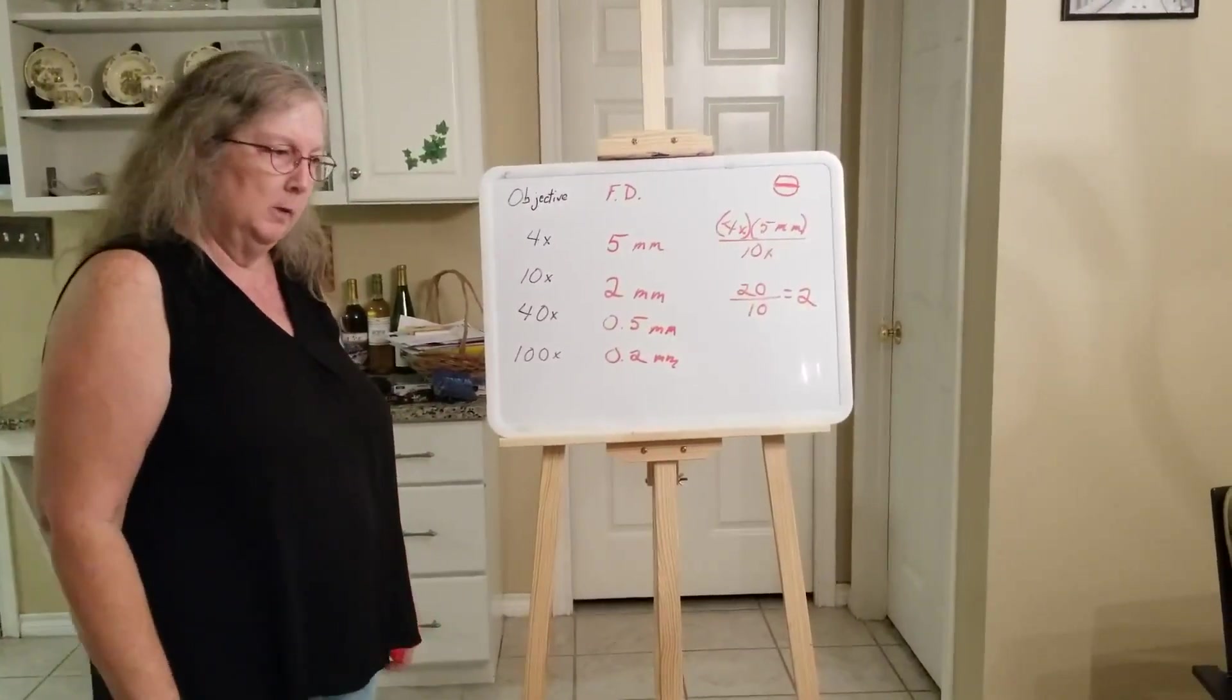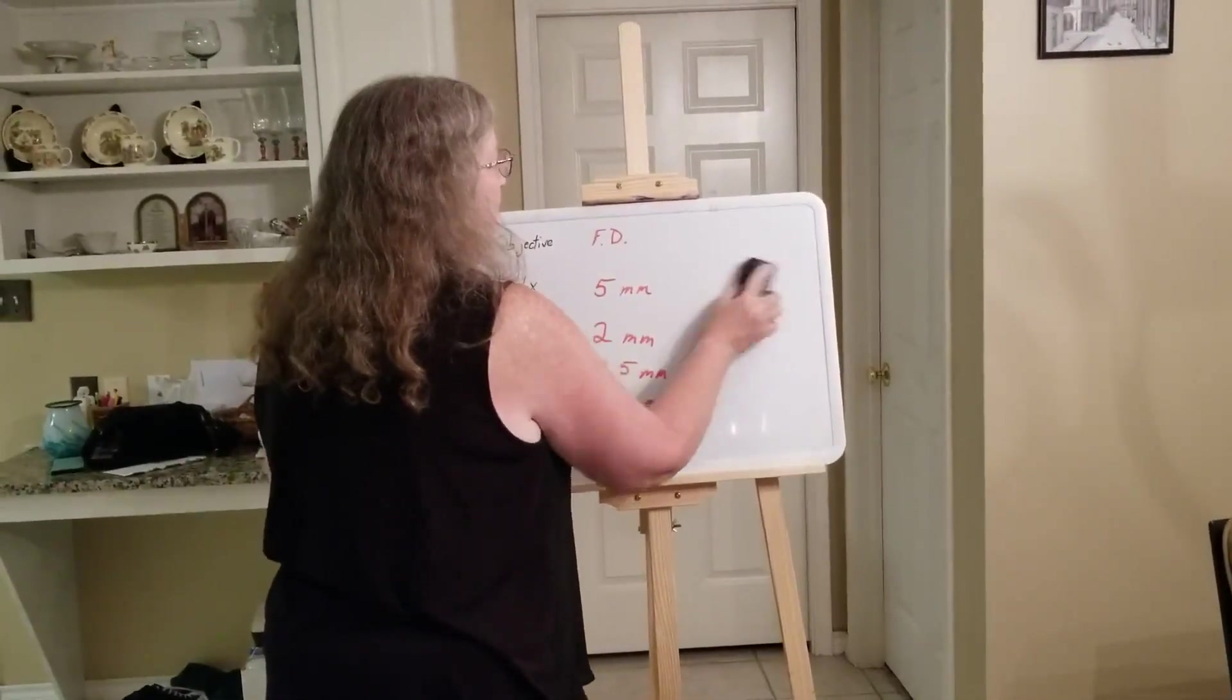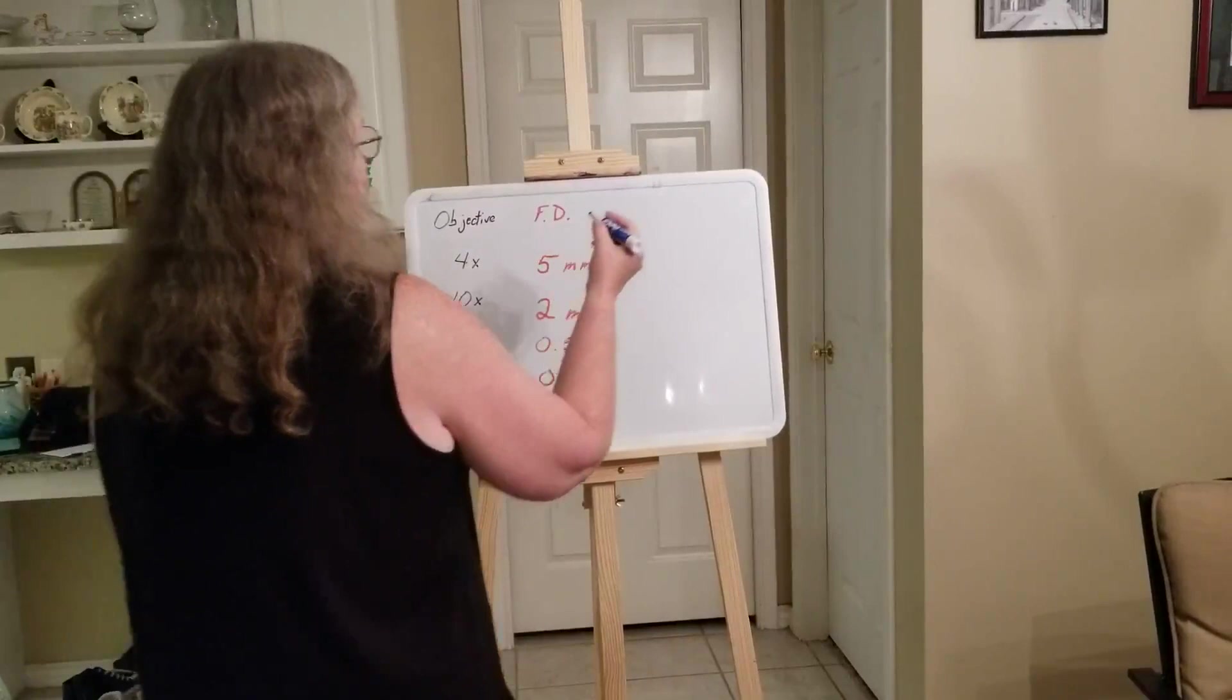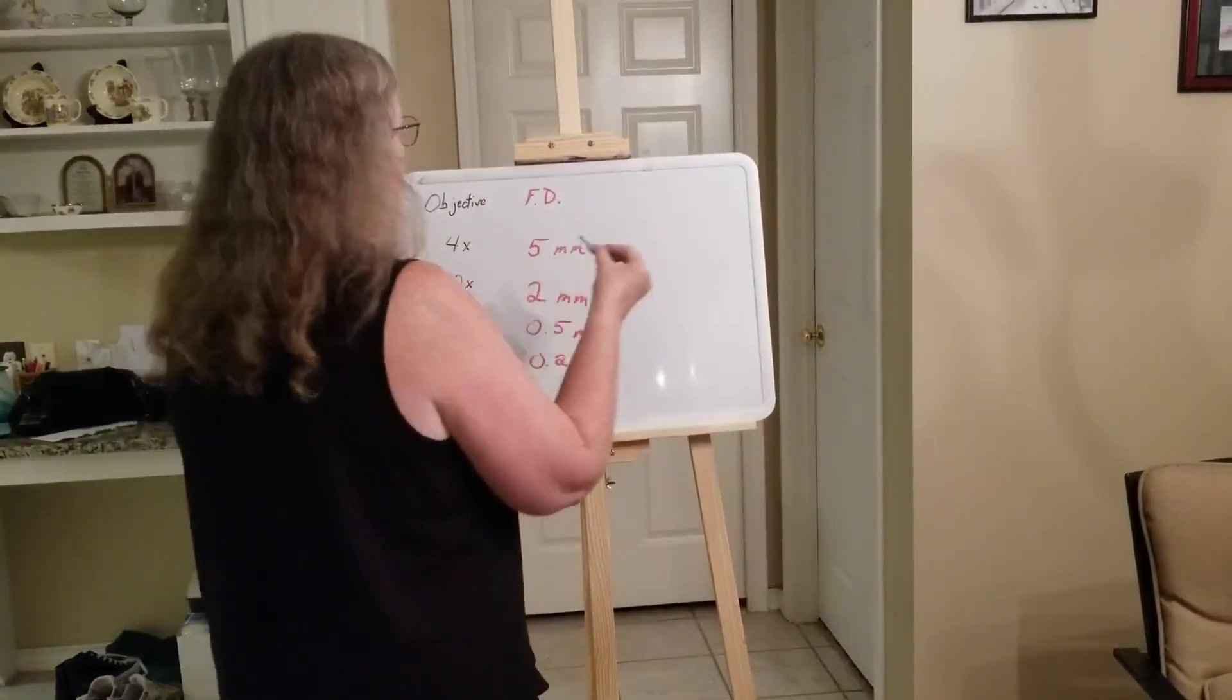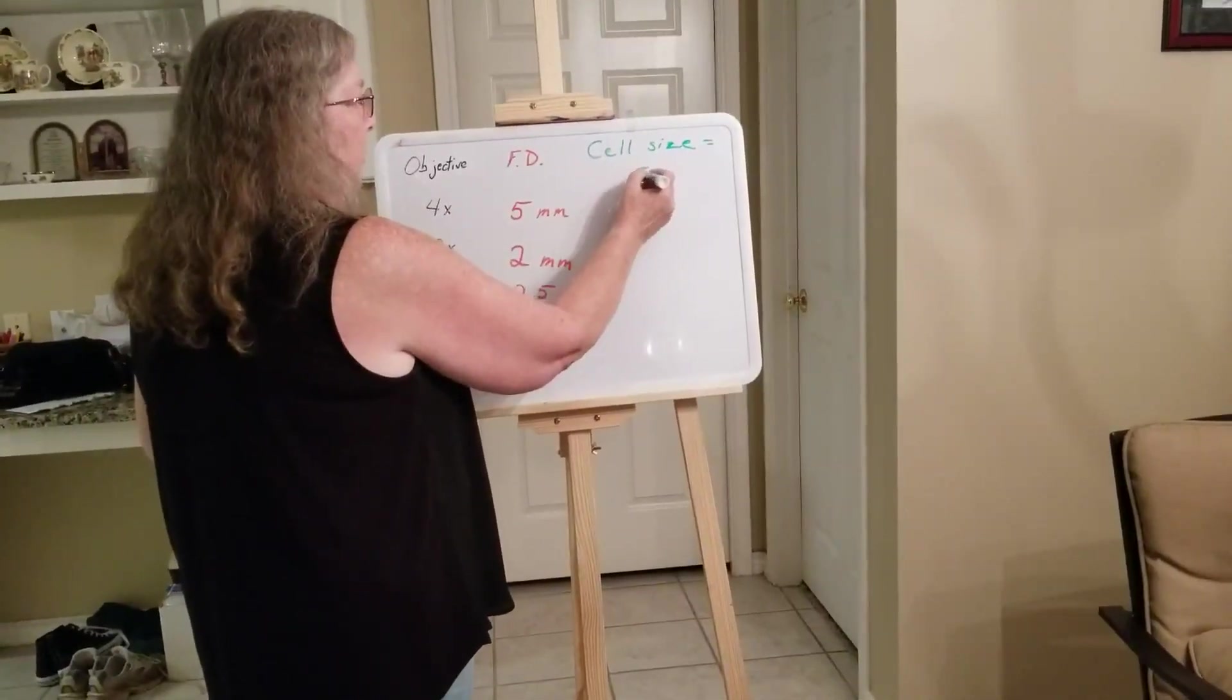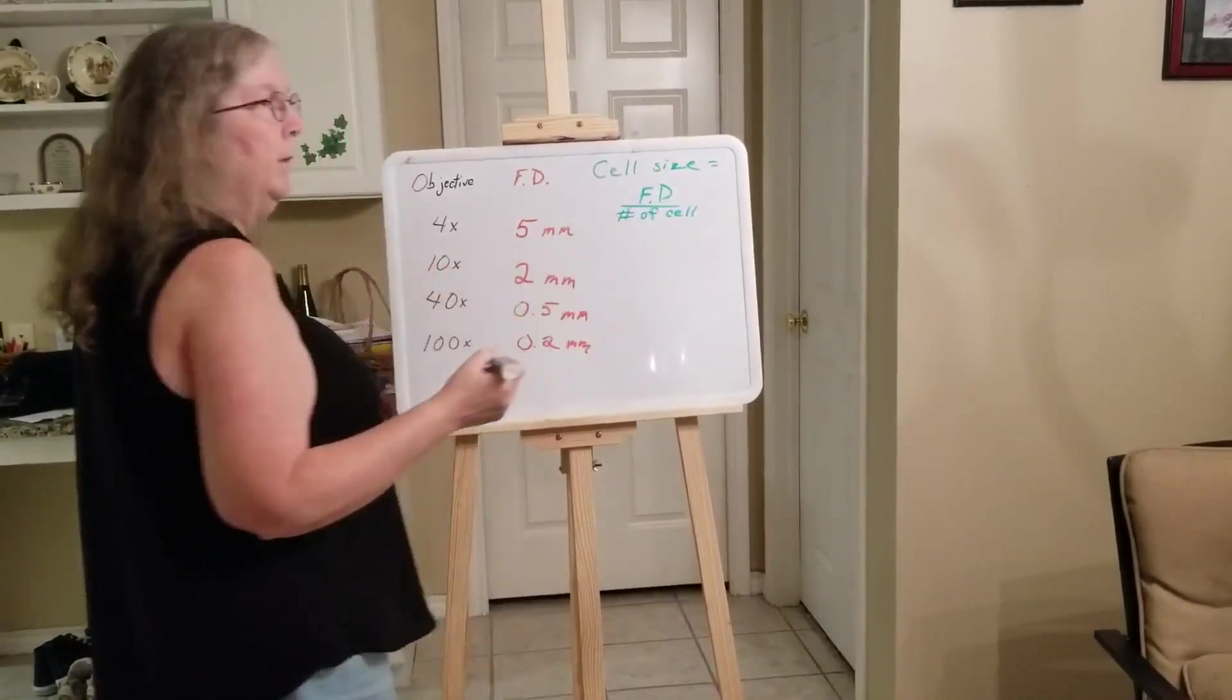You're going to have to know your field diameter, which means you're going to have to know your total magnifications. Cell size. The formula for this is you take the field diameter and you divide it by the number of cells that would fit across the diameter.